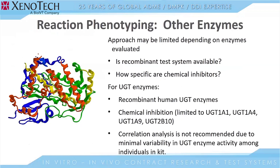Now, this typical reaction phenotyping study design that we use mostly for CYP enzymes can also be applied for other enzymes. However, the approach may be limited depending on the enzymes being evaluated, as a couple of conditions need to be met. First, is there a recombinant test system available for the enzyme in question? And second, are there specific chemical inhibitors available for the enzyme that you'd like to investigate? For example, for UGT enzymes, we have a large panel of recombinant UGT enzymes available, so we're able to perform recombinant UGT experiments. However, when it comes to chemical inhibition, we're limited to only four UGT enzymes, as we only have specific chemical inhibitors for these four UGTs. Additionally, correlation analysis is not recommended when looking at UGT enzymes due to variability in UGT enzyme activity across individuals.